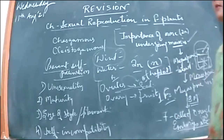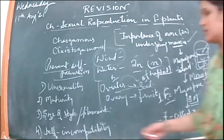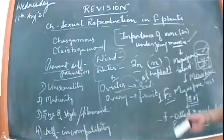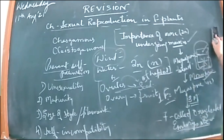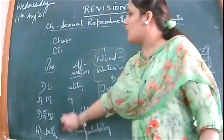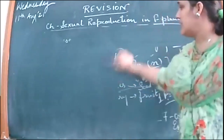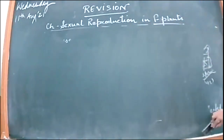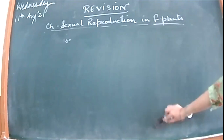So now when the male and female gametes have been produced — that is microsporogenesis and megasporogenesis — along with the questions we have discussed these points. We covered all the introductory portions: how to prevent self-pollination, how to prevent cross-pollination — all these questions have been discussed.